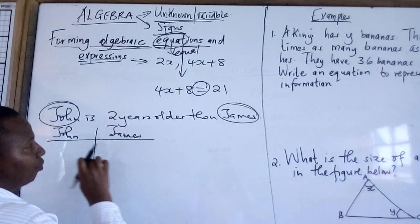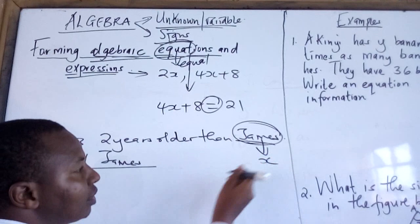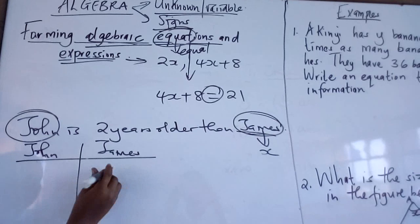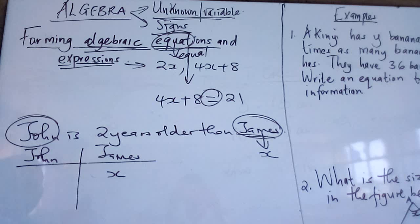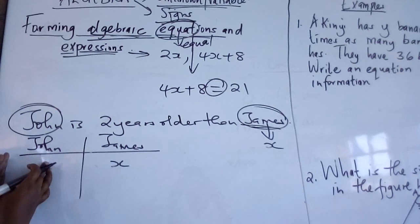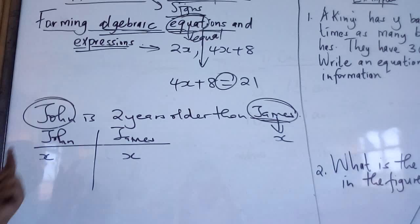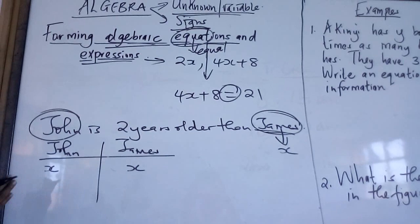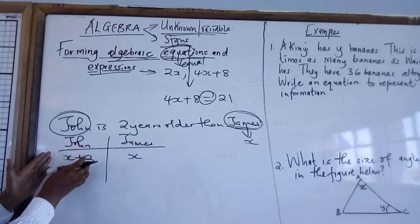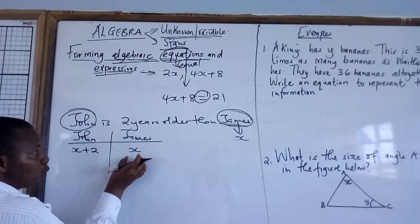If we decide to use x to represent the age of James, then in our table we write x years. If James is x years, we then express John's age in terms of James. The statement says John is two years older than James, so the age of John is represented as x plus 2, since x is the age of James.